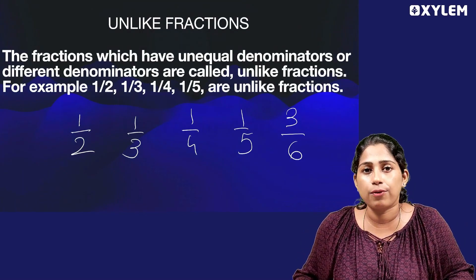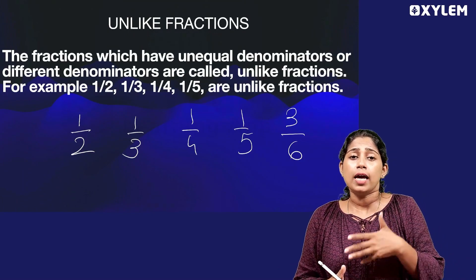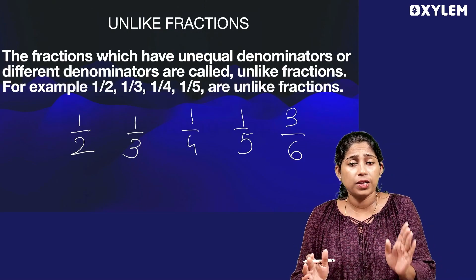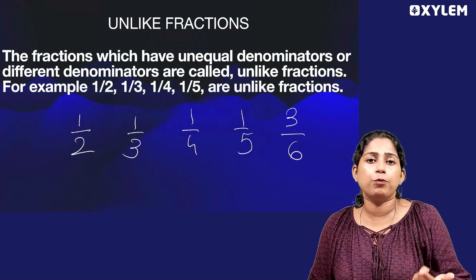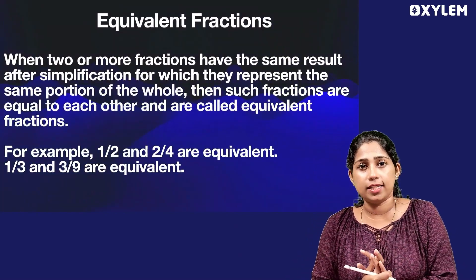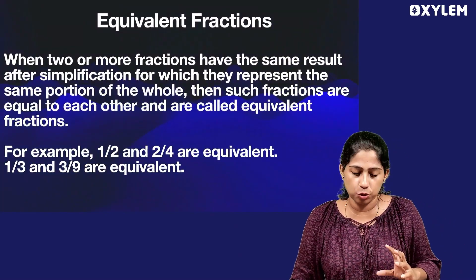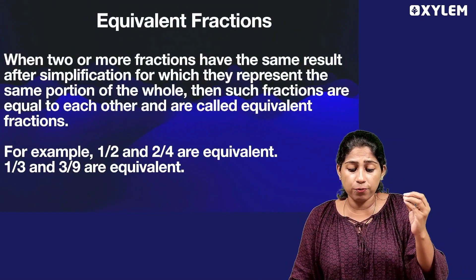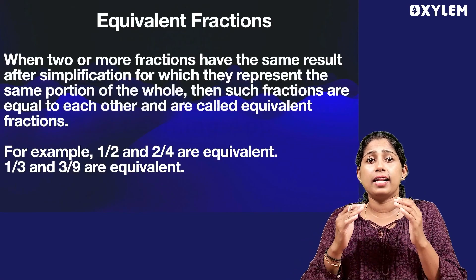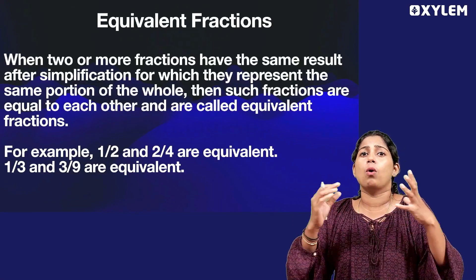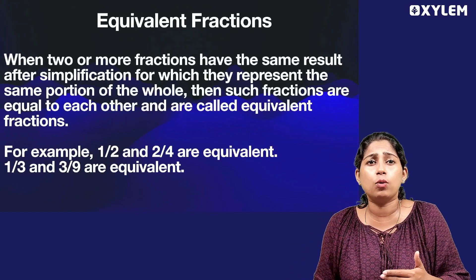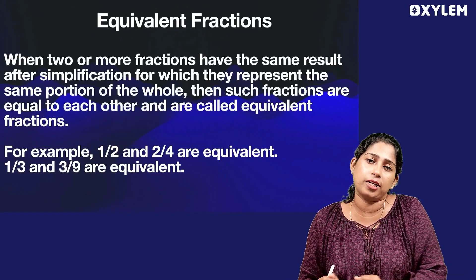Unlike fractions have different denominators, while like fractions have the same denominator. Now, one type of fraction is equivalent fractions. When two or more fractions have the same result after simplification and represent the same portion of the whole, then such fractions are called equivalent fractions.